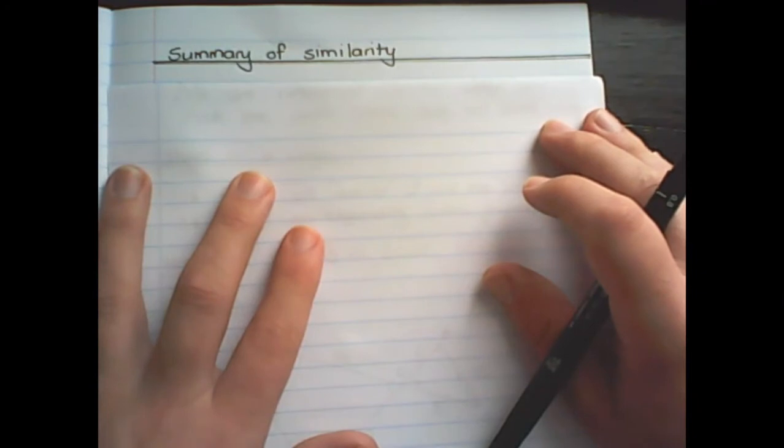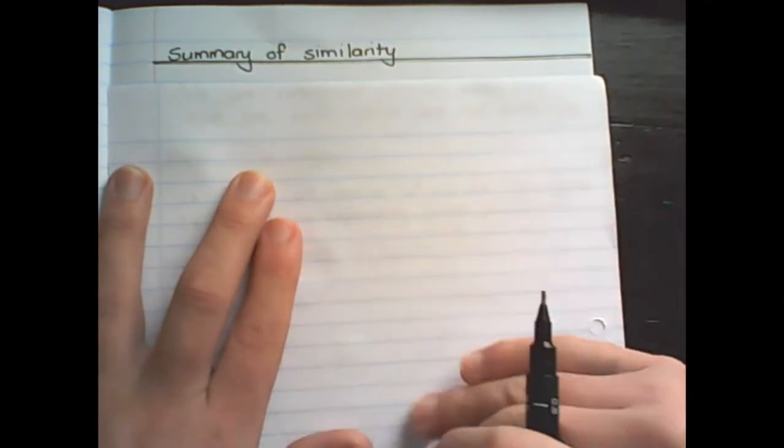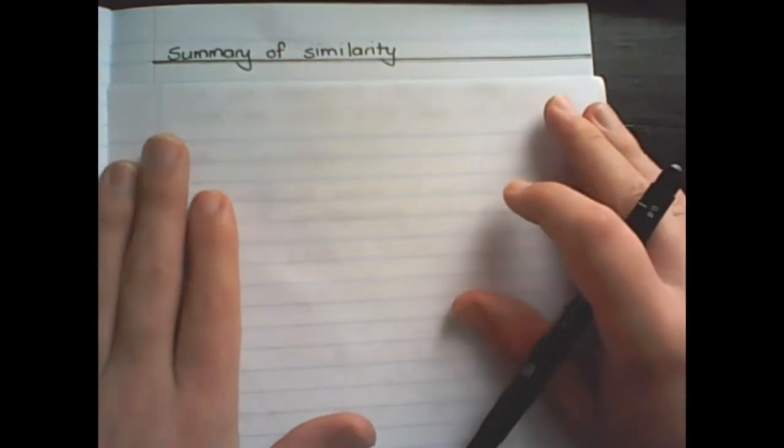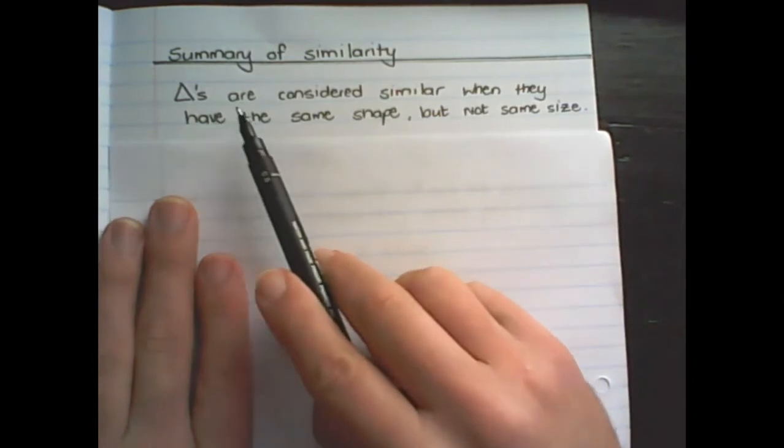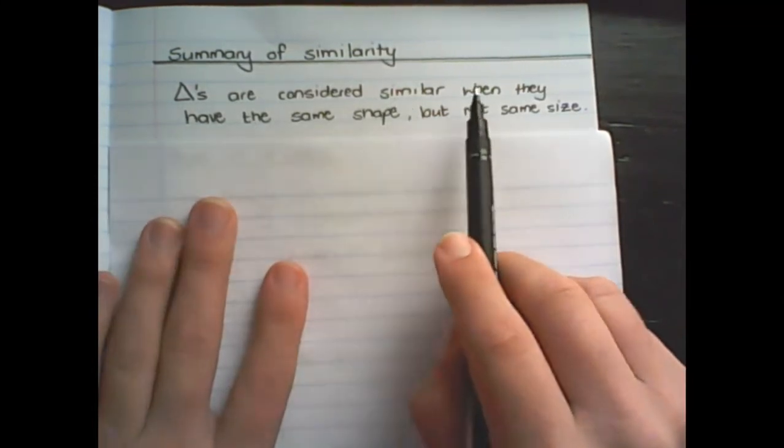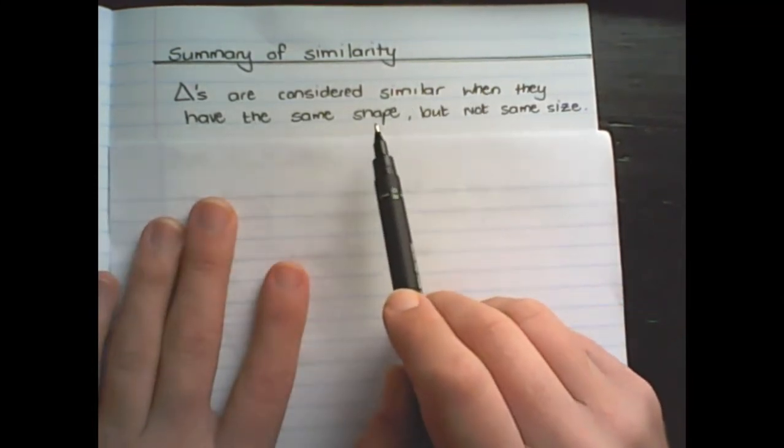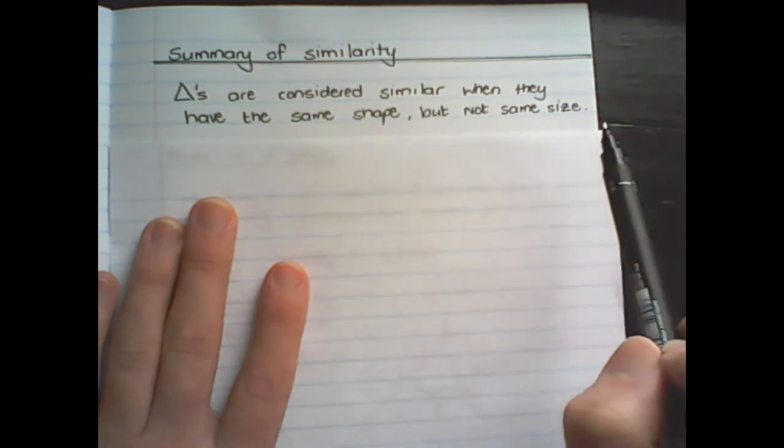But before we go on, let us quickly discuss what Mr. Mdluli shared in the previous video. So triangles are considered similar when they have the same shape, but not necessarily the same size.